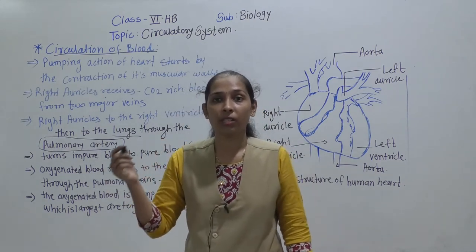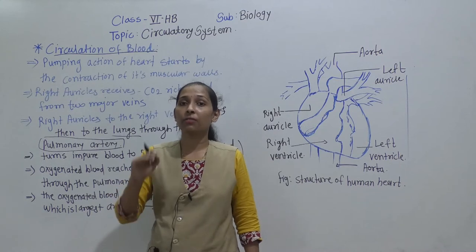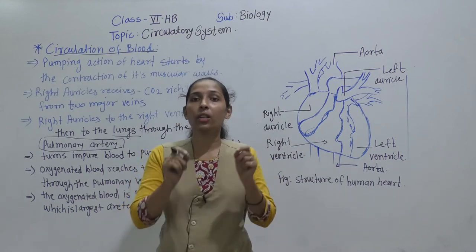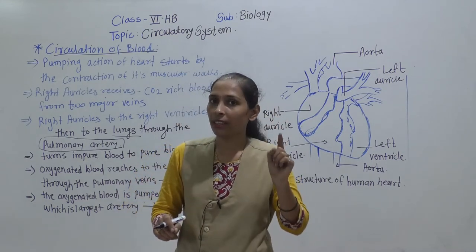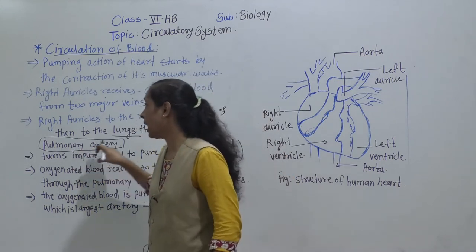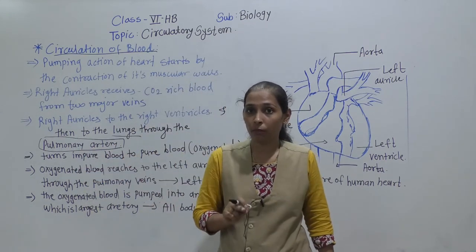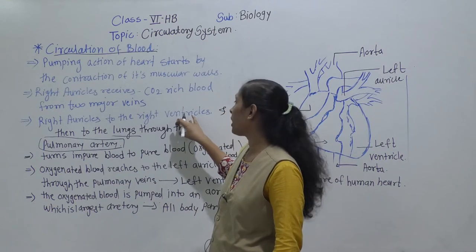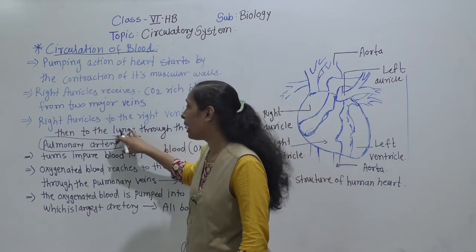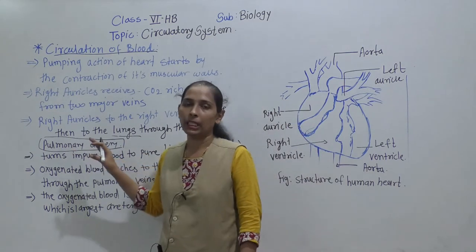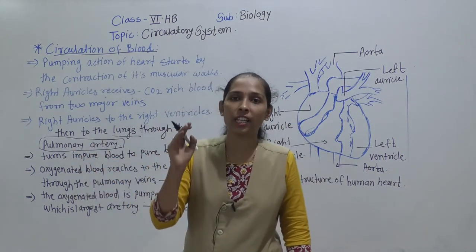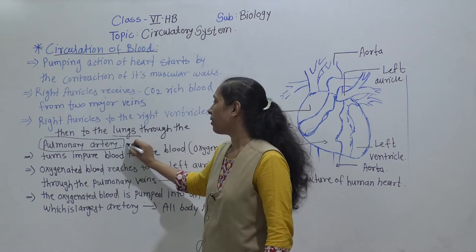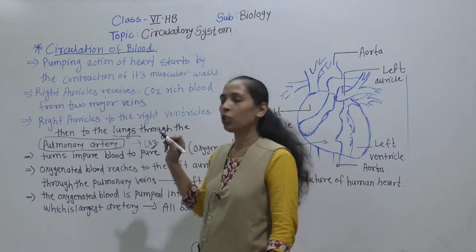As we discussed, arteries generally carry oxygenated blood. However, the pulmonary artery is an exception: it carries carbon dioxide-rich, deoxygenated blood from the right ventricle to the lungs.